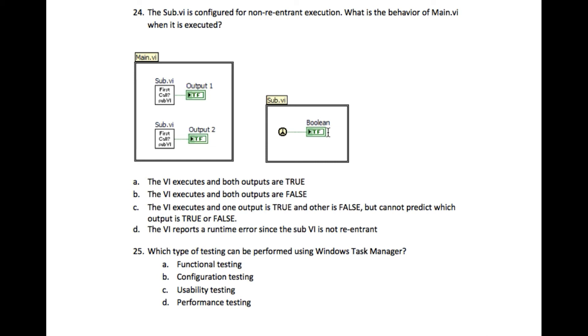So the answer is going to be C, because we won't be able to determine which of the output is going to give true and which one is going to give false, because we cannot determine which copy of this sub-VI is going to run first.